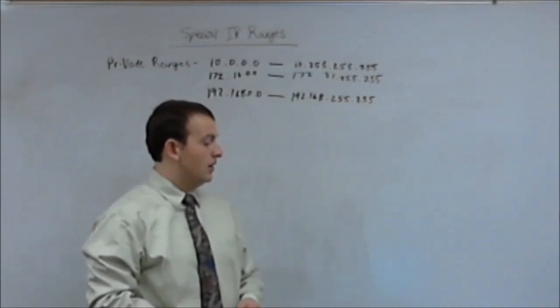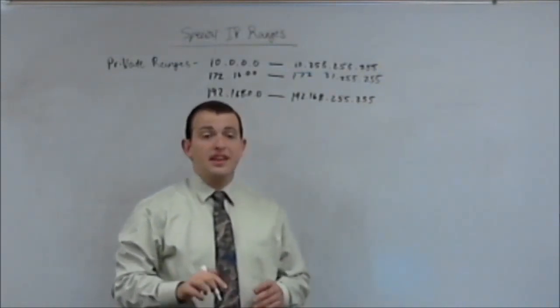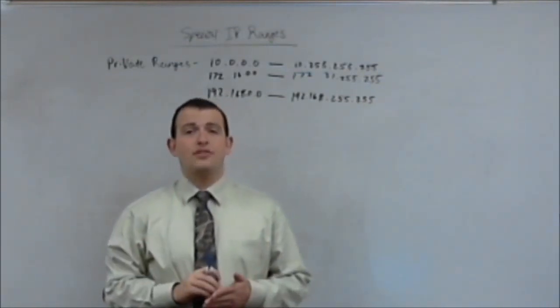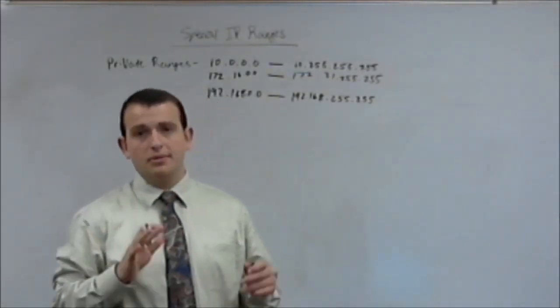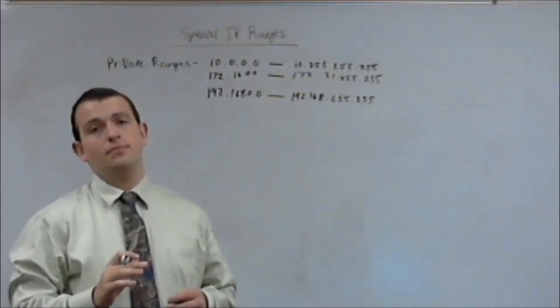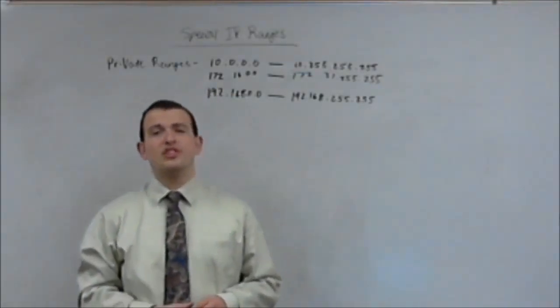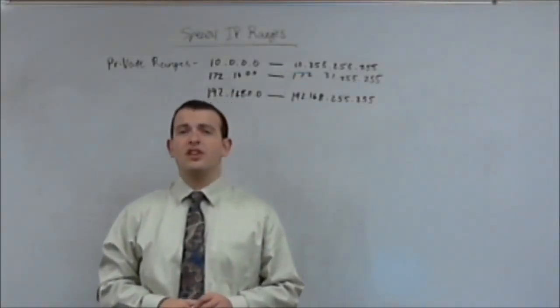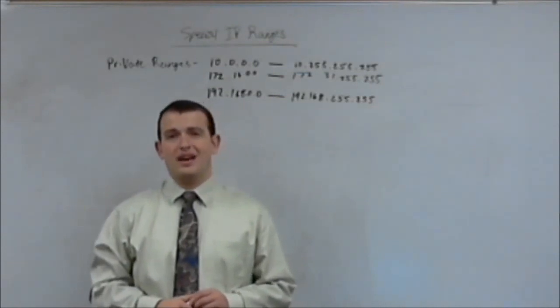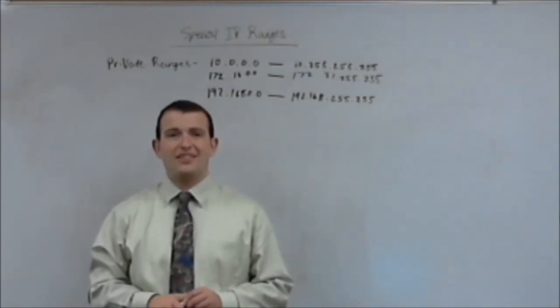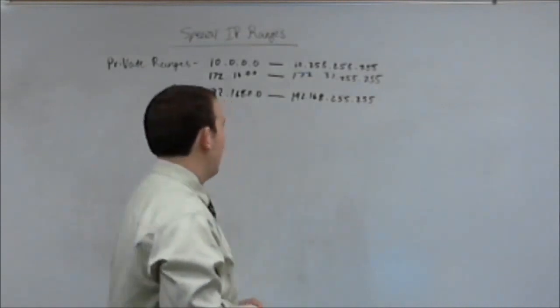So these are your private IP addresses. They are the ones that are not routable. You won't be able to use them across the internet. You'll need to use them behind network address translation. This of course is so that private networks will never have an issue with not having enough IP addresses on the network.